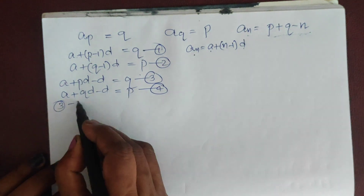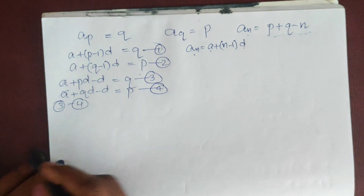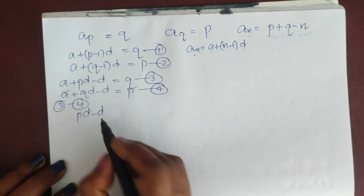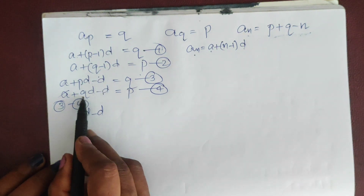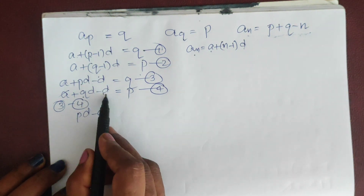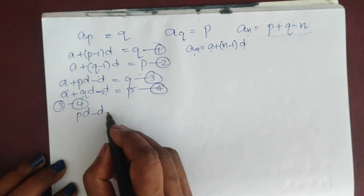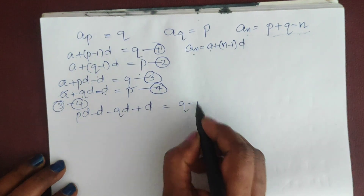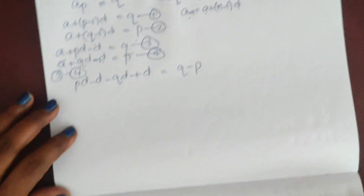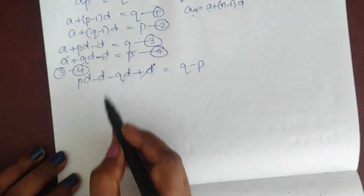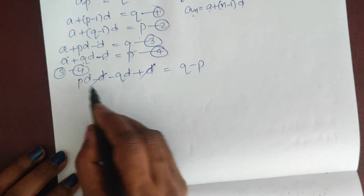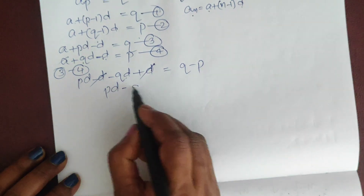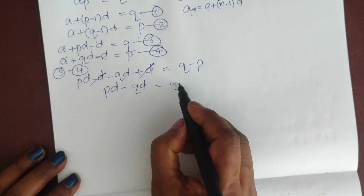Subtracting equation 4 from equation 3: the a terms cancel. We get pd - d - qd + d = q - p, so pd - qd = q - p.